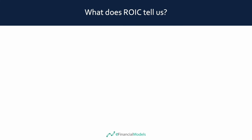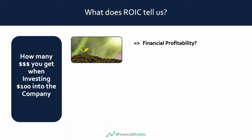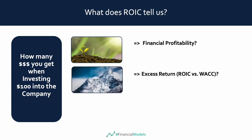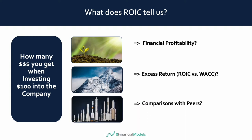What does ROIC tell us? An ROIC of 12% tells us that when investing $100 into a company, a $12 profit can be generated. ROIC tells us the financial profitability of the company. We can compare the ROIC to the weighted average cost of capital, which includes the cost of equity and debt financing, and see if there was any excess return, or economic return, generated. We can also compare the ROIC of different companies and directly compare their profitability to each other.